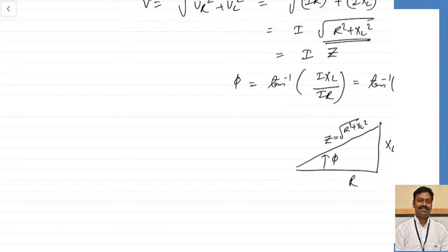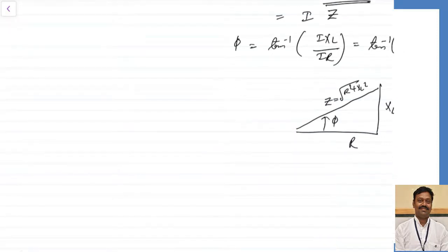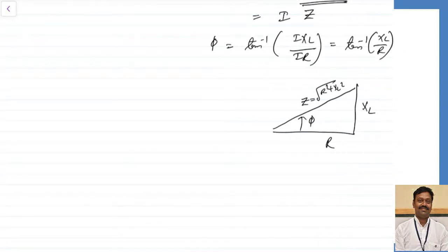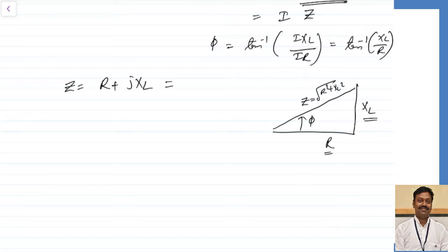We are going to use the impedance triangle whenever we calculate. In the impedance triangle, R is taken as my reference — R is at an angle of 0 degrees. XL leads the resistance by 90 degrees, so XL is nothing but j times XL. The resultant Z is the combination R + jXL. So I can write Z = R + jXL, or equivalently Z = Z∠φ where φ = tan⁻¹(XL / R).